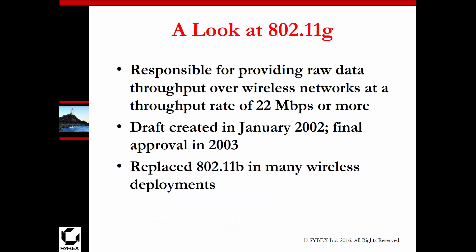Next, 802.11g came around late 2002 to early 2003. It replaced 802.11b because g operated at 54 megabits per second at the 2.4 GHz band. It was said to have 22 megabits per second, but realistically g was more like 54.